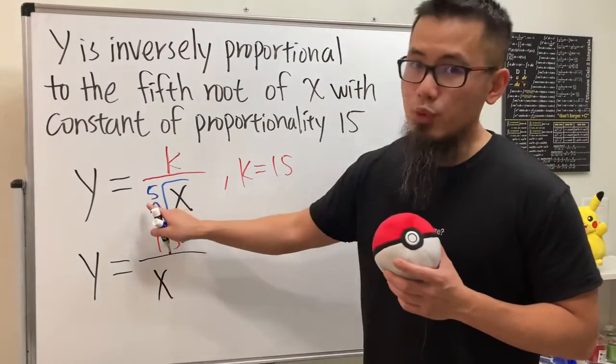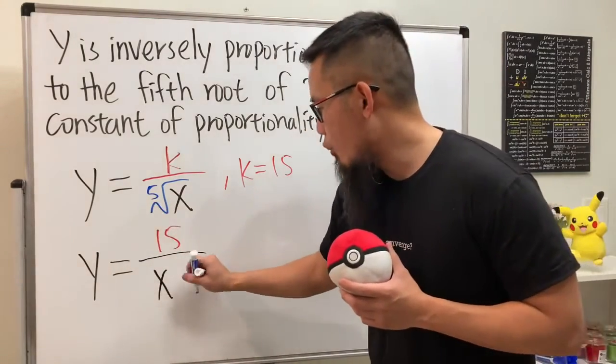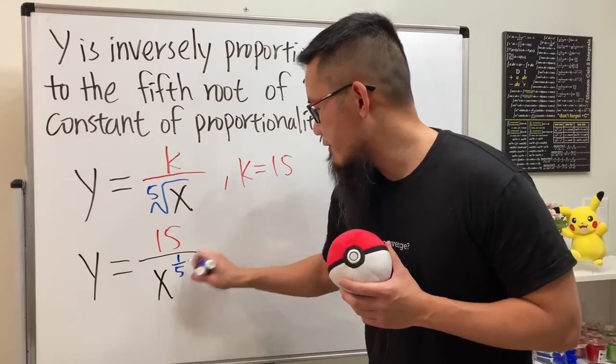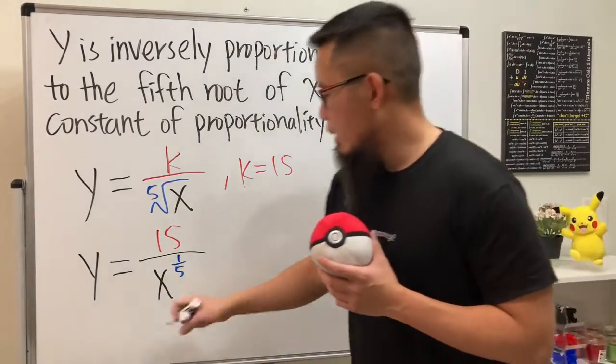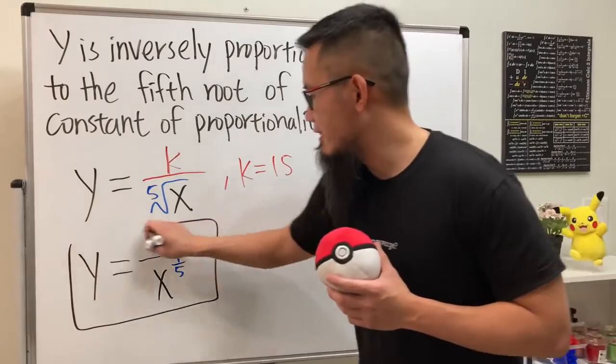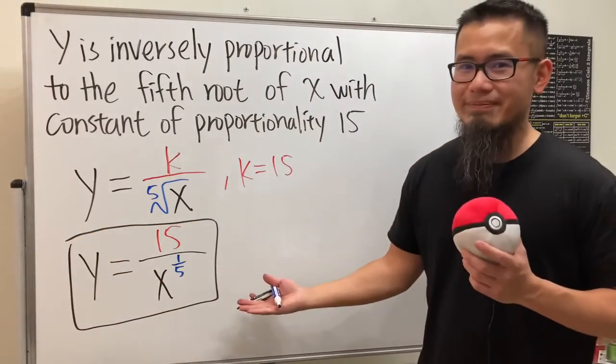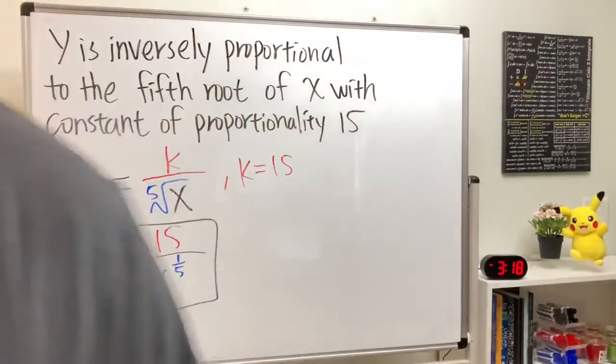x and then the fifth root. It's the same as one over five power, like so. And with that being said, this is it.